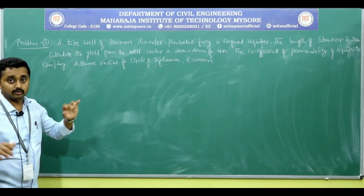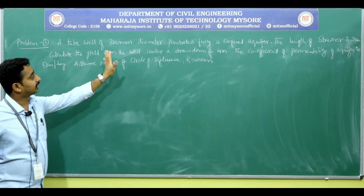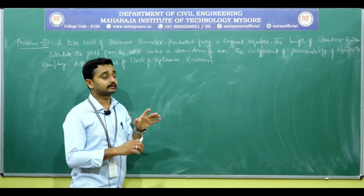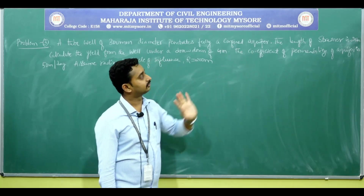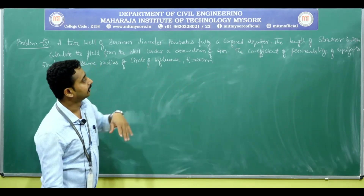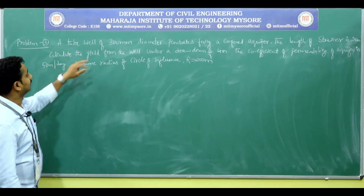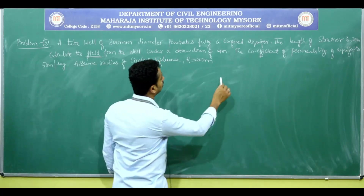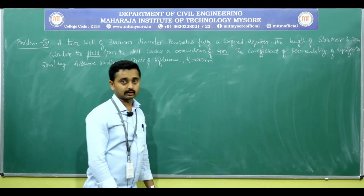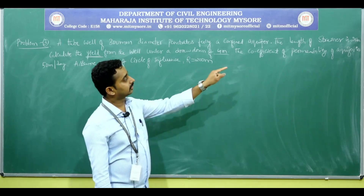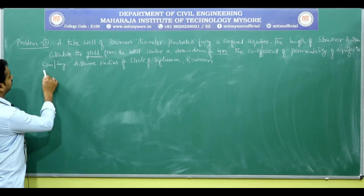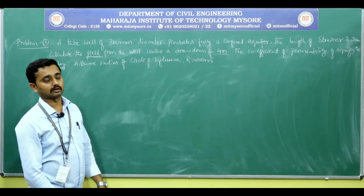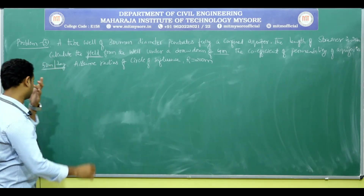Let's understand the given problem thoroughly. A tube well of diameter 300 mm penetrates fully a completely confined aquifer. The length of the strainer in the tube is 25 meters. Calculate the yield — nothing but discharge — from the well under a drawdown of 4 meters. Assume radius of circle of influence, capital R, zone of influence, is 200 meters.